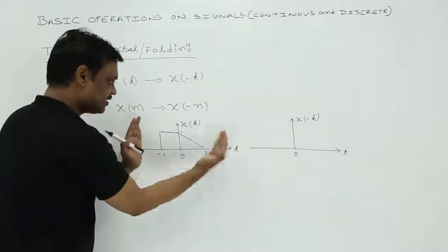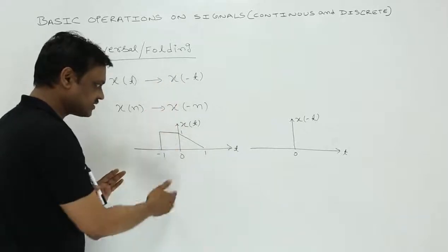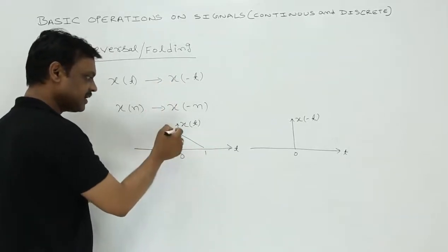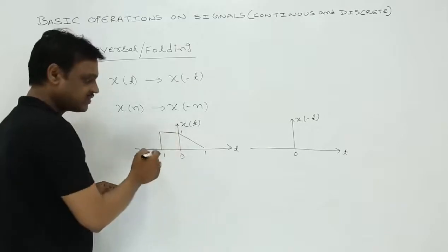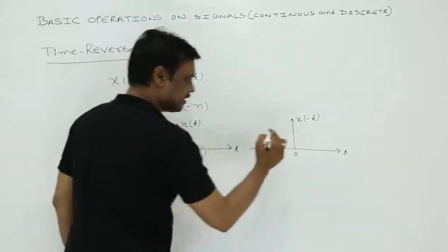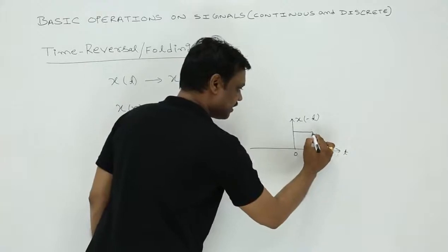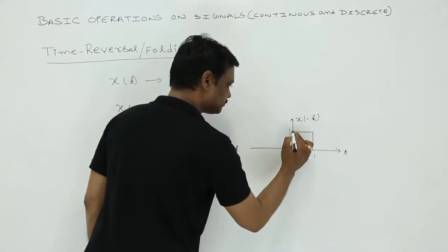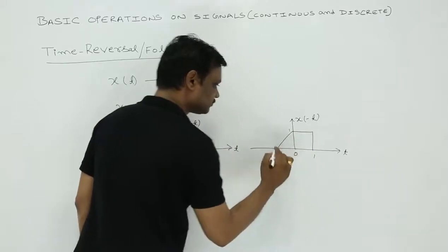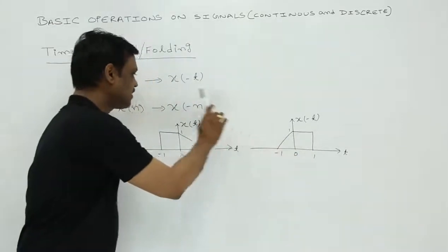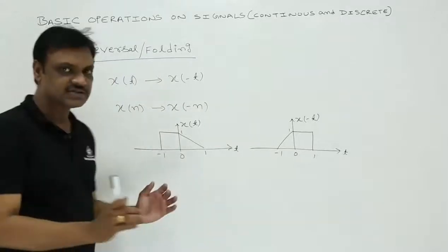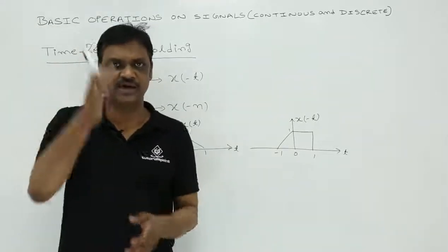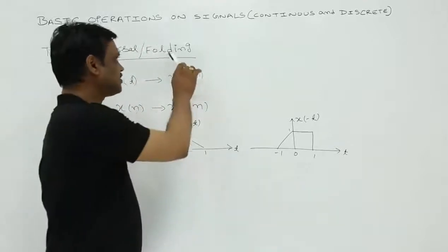For example, here the signal is folded about the y-axis. So this part will appear on the left side and this part appears on the right side. Then you will be getting a signal like this. This is the time reversal of x of t. Because you are getting the signal by just folding about the y-axis, so this is also called folding.